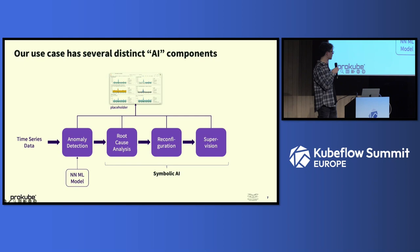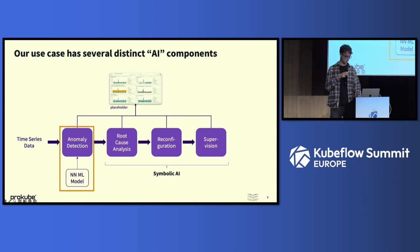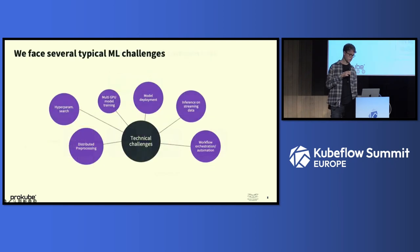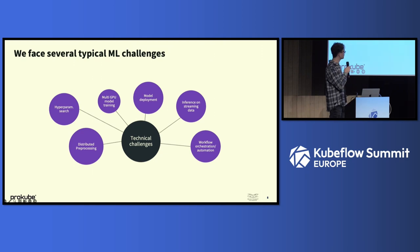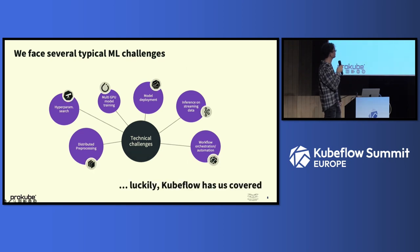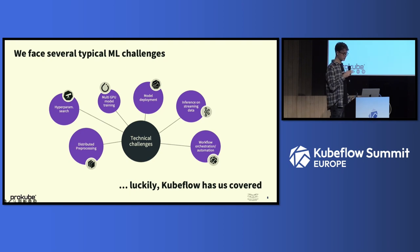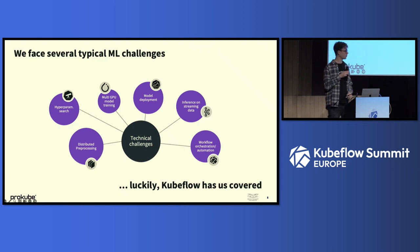We also use KServe with custom transformers and predictors for that. We face some pretty standard challenges: distributed preprocessing because we have a lot of data, model training, hyperparameter search, model deployment, multi-GPU model training, inference on streaming data, and pipelines to tie all of that together. Luckily, Kubeflow has us covered. We use Kubeflow Pipelines to tie it all together, KServe, the training operator, Katib, and also Dask for distributed preprocessing.